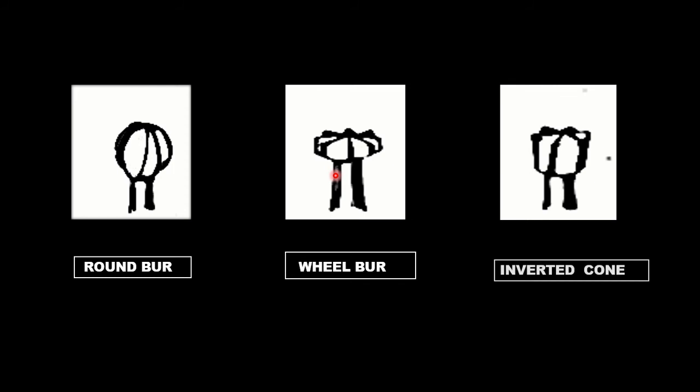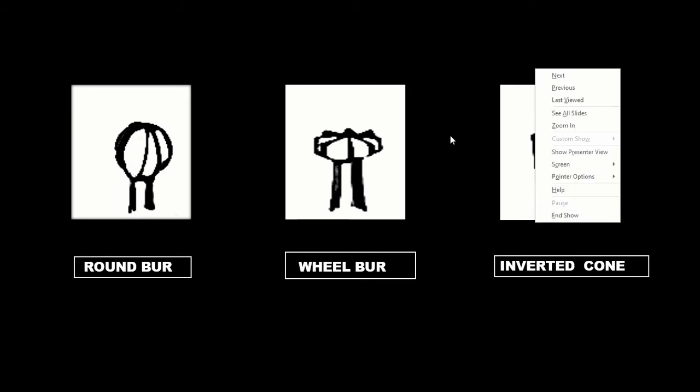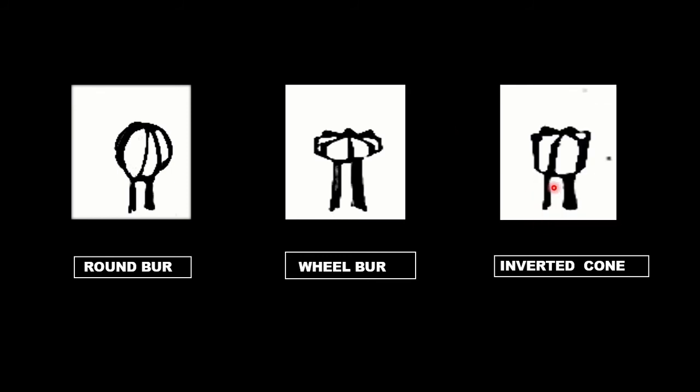This is inverted cone bur. Here we can see the apex of the cone is directed toward the bur shank. These are used for cavity extensions and occasionally for establishing wall angulation and for retentive features. They are also used for providing undercuts.